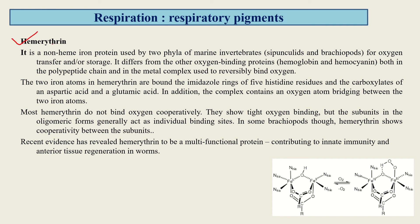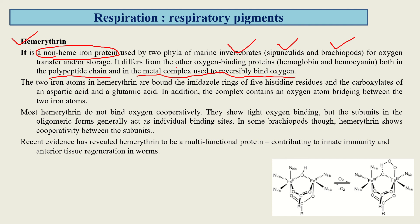The fourth respiratory pigment is hemerythrin. It is a non-heme iron protein used by two phyla of marine invertebrates — sipunculans and brachiopods — for oxygen transport or storage. It differs from other oxygen-binding proteins like hemoglobin and hemocyanin in the polypeptide chain and in the metal complex used to reversibly bind oxygen.